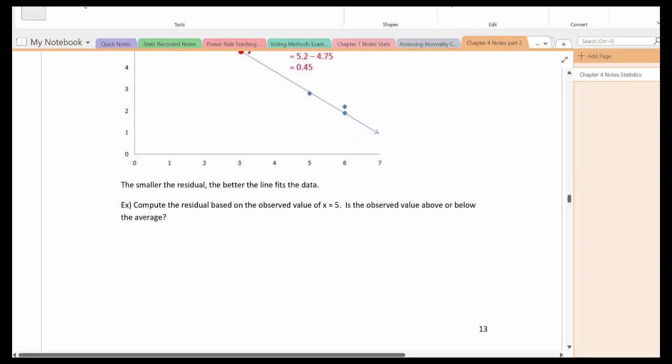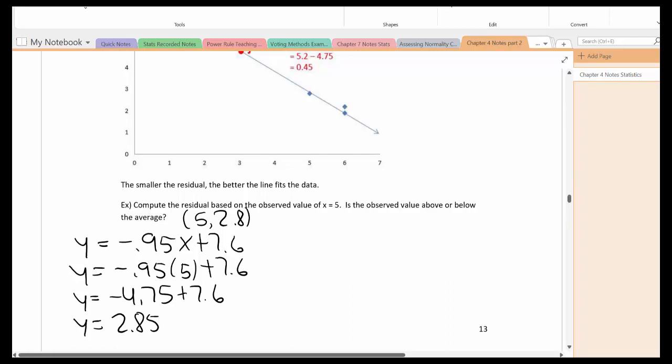If the residual was negative, then it would be below the average. So let's compute the residual on the observed value of x equal to 5. Remember the ordered pair was 5 comma 2.8. So now I need to be able to predict the y value for x equal to 5. So again, go back to the equation we came up with. Now plug in 5 for x. This gives us 2.85.